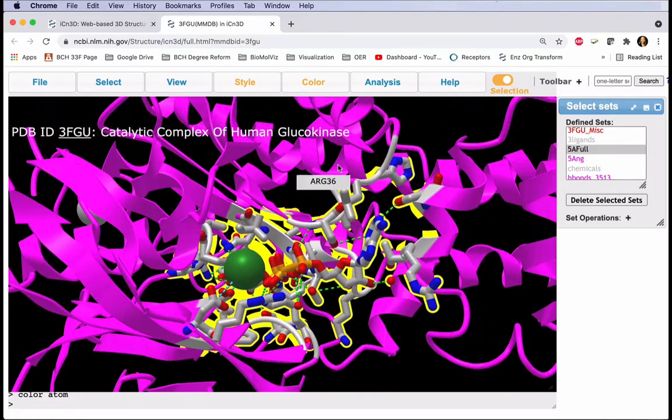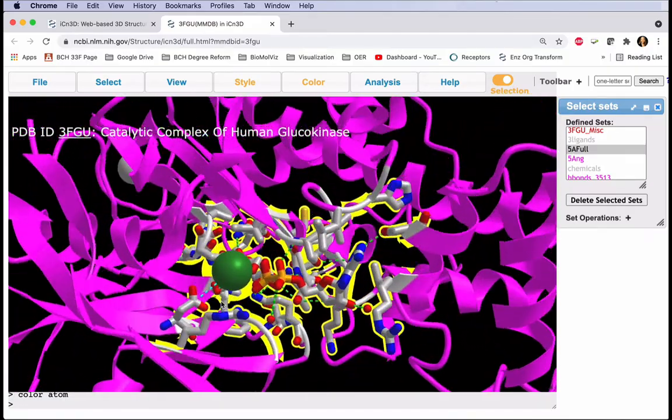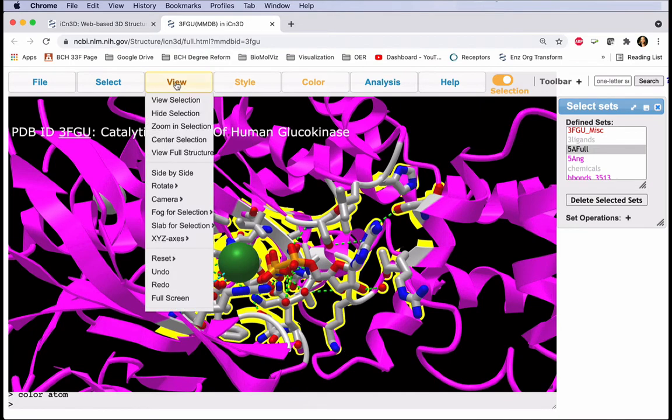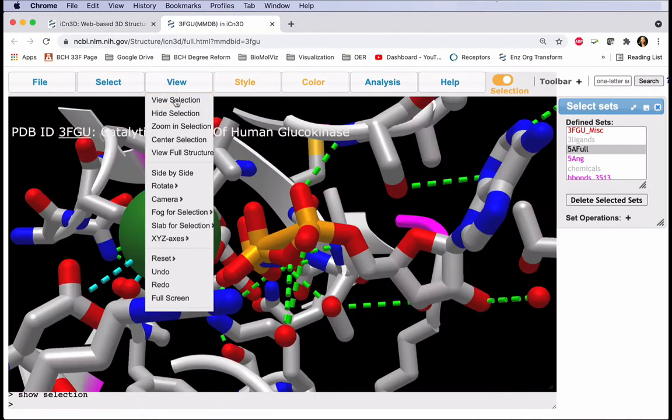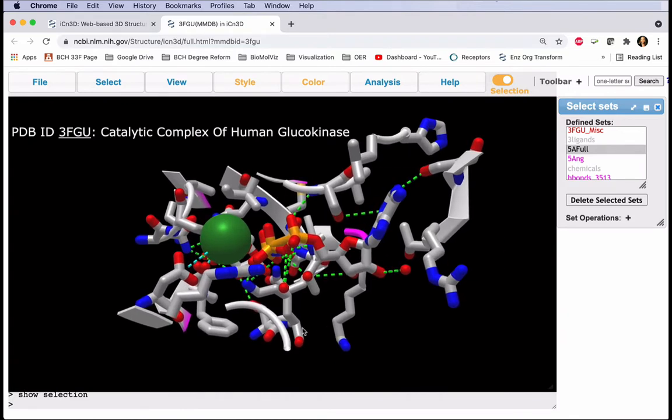It's nice to see our active site in the context of the protein. However, it makes the view busy and a little difficult to see. To focus on our selection, we can click View, View Selection. It zooms in, but now just the selection is shown. But parts of our protein are still shown in the cartoon representation.